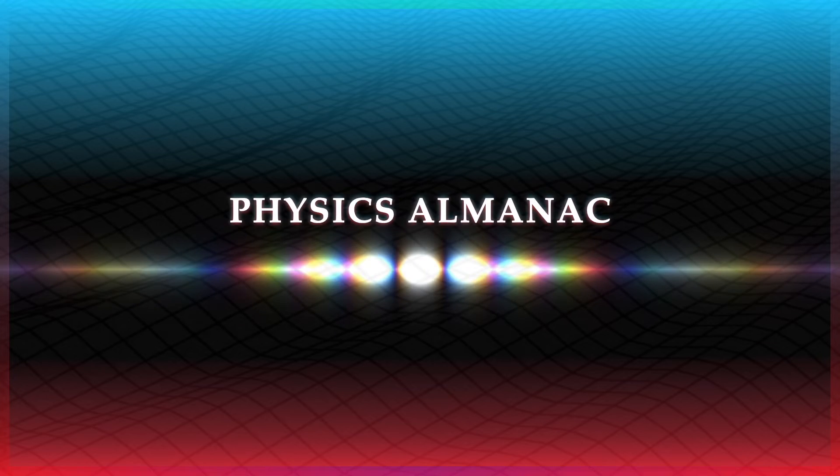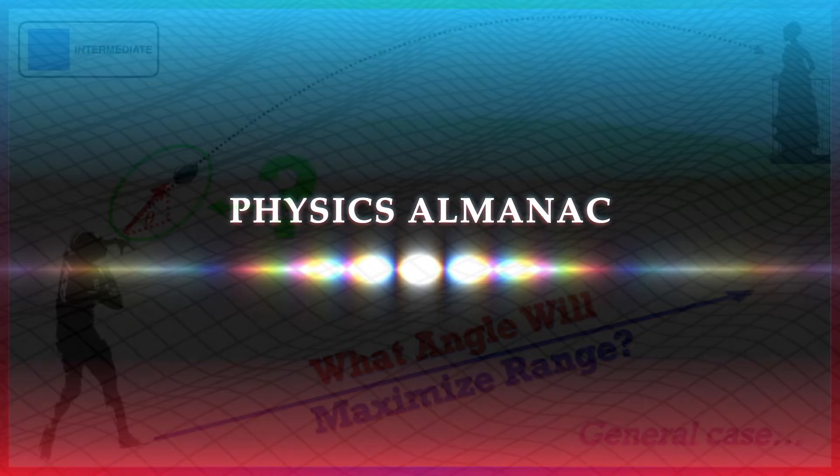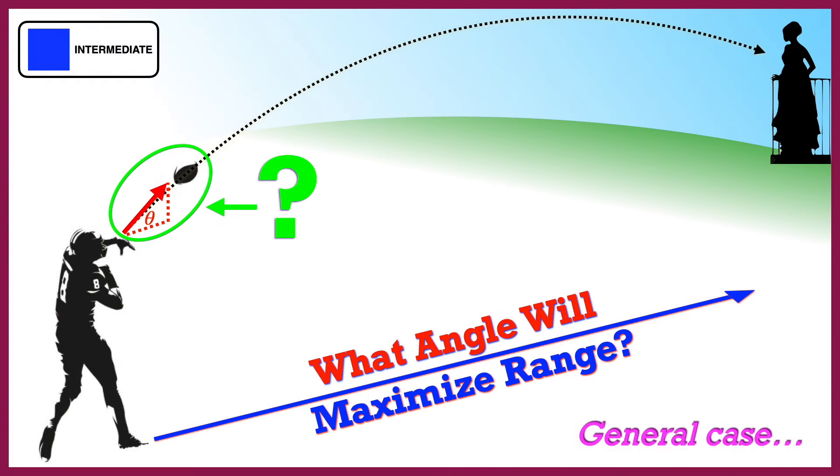For more physics-related videos, please subscribe. In this video we're going to be looking at what angle you must throw a ball in order to maximize the range, assuming that the ball is not caught at the same height as it was thrown.